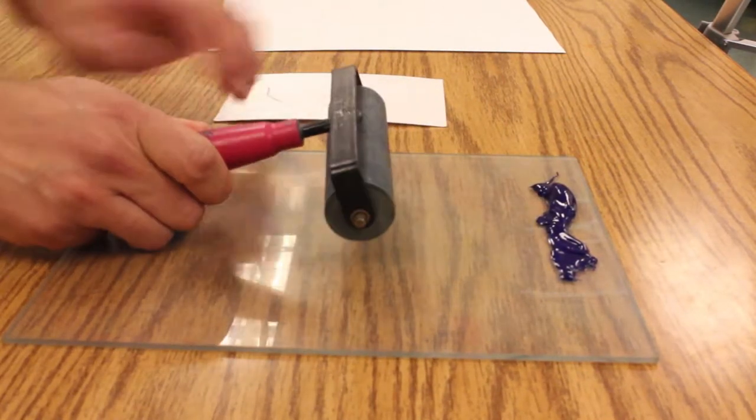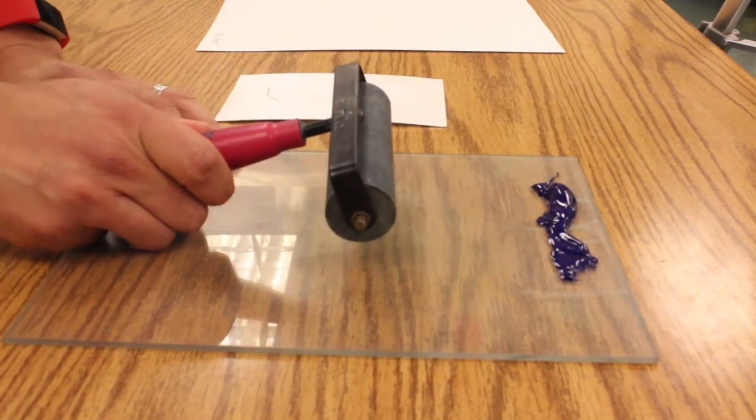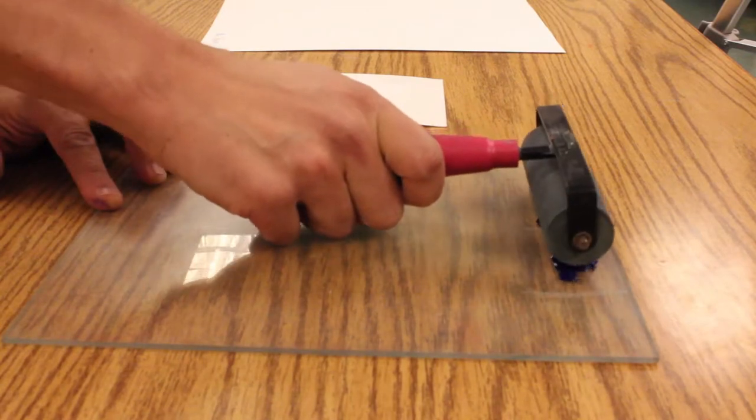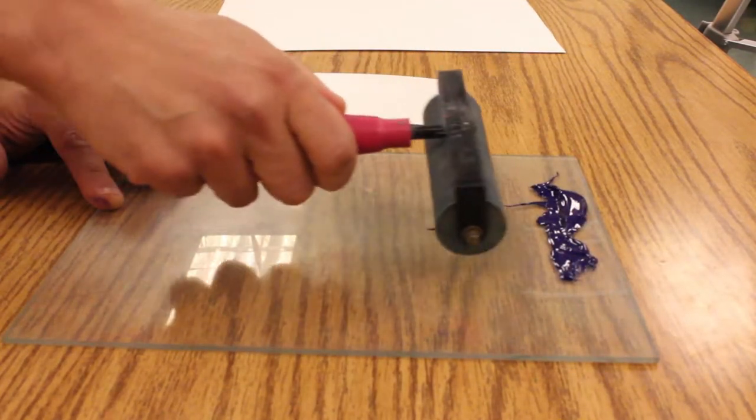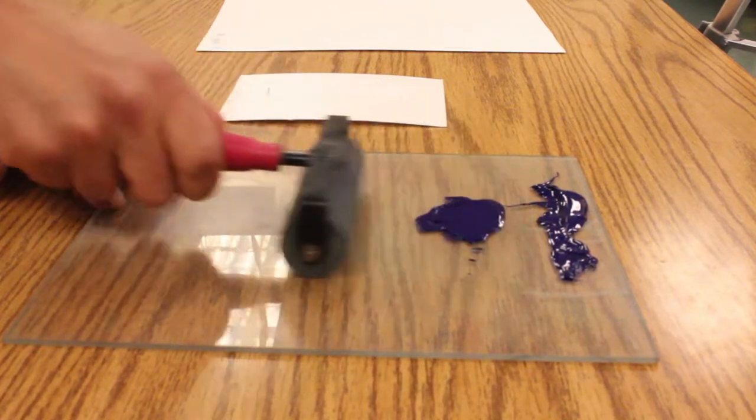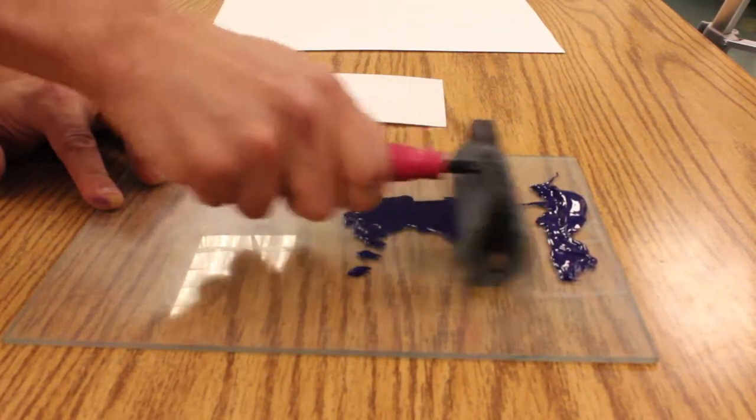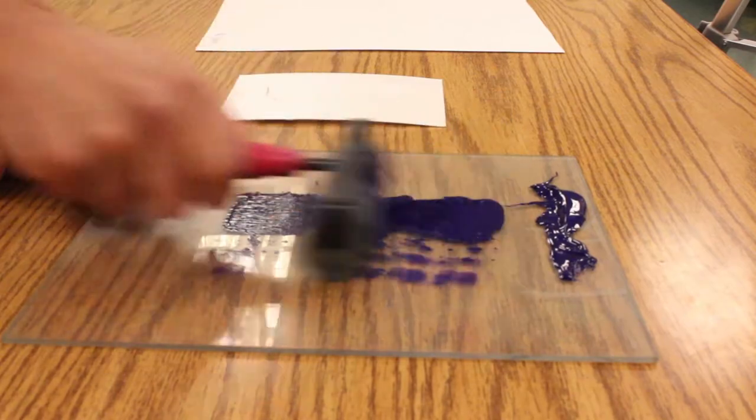So what I do is I just tap the brayer on there, and then I start to roll backwards. I'm going to do a little bit across so I just fill in just a little area here.